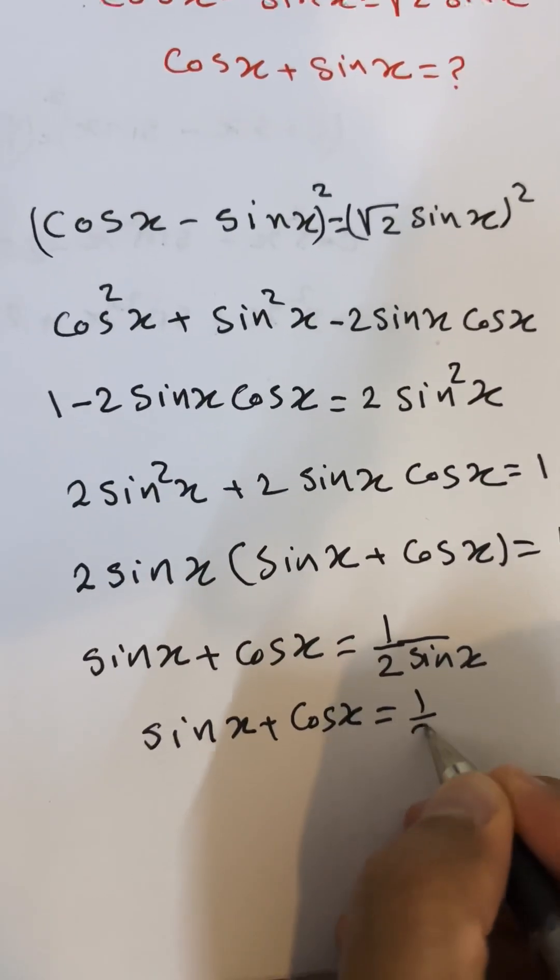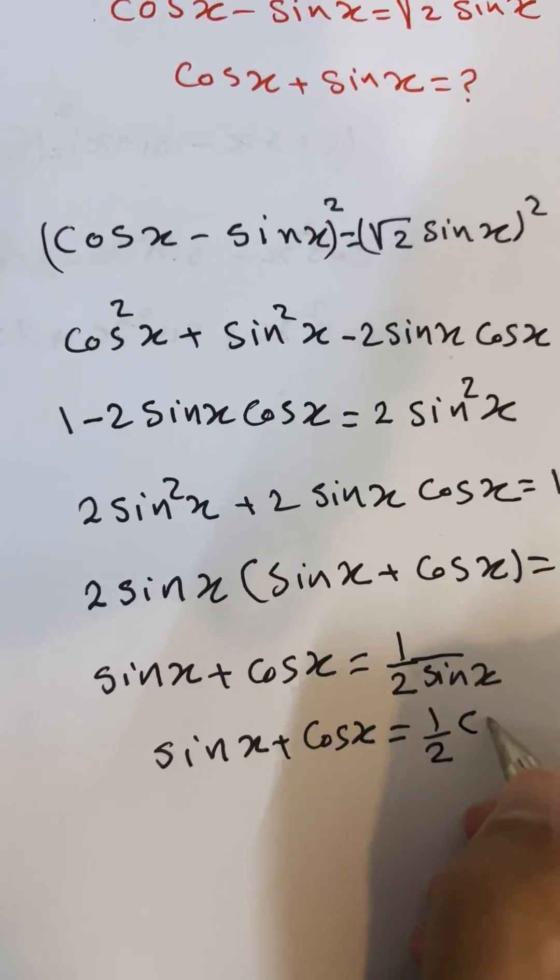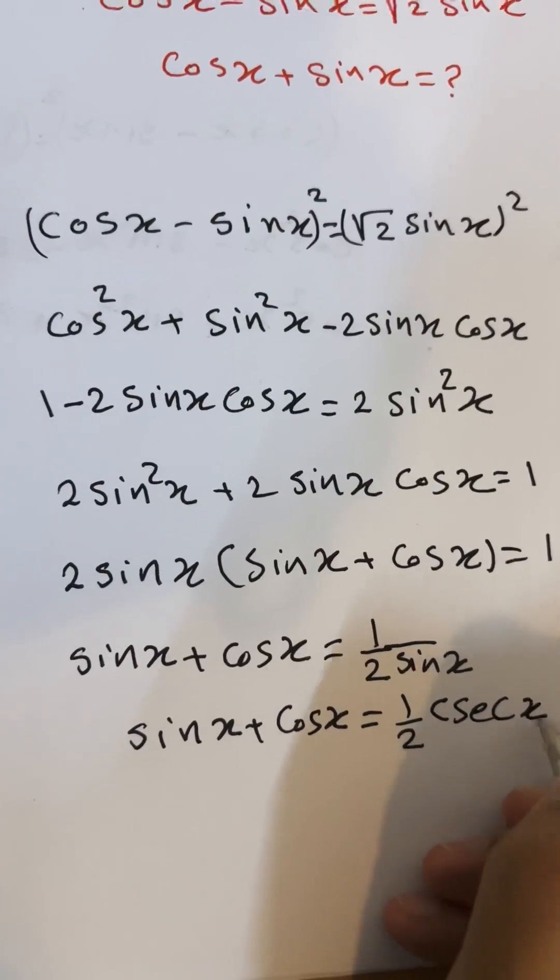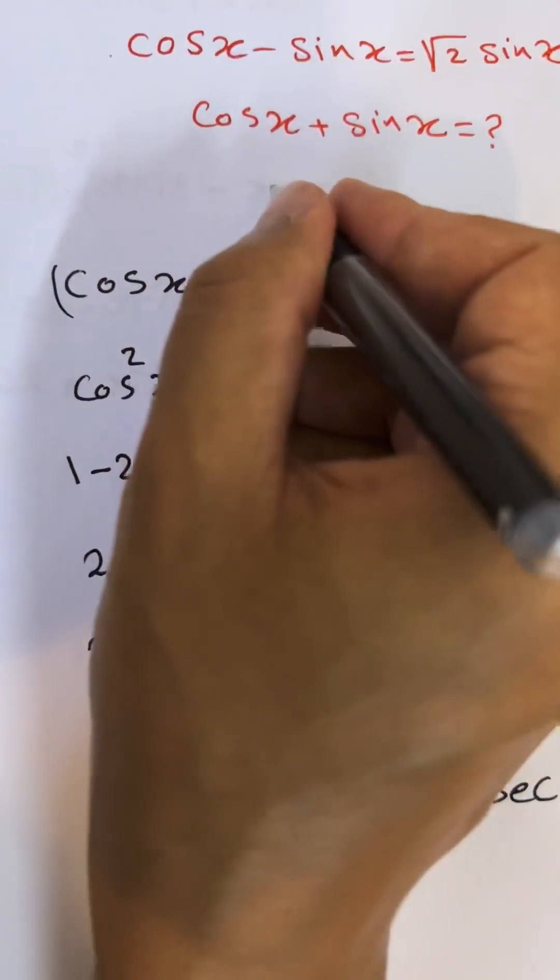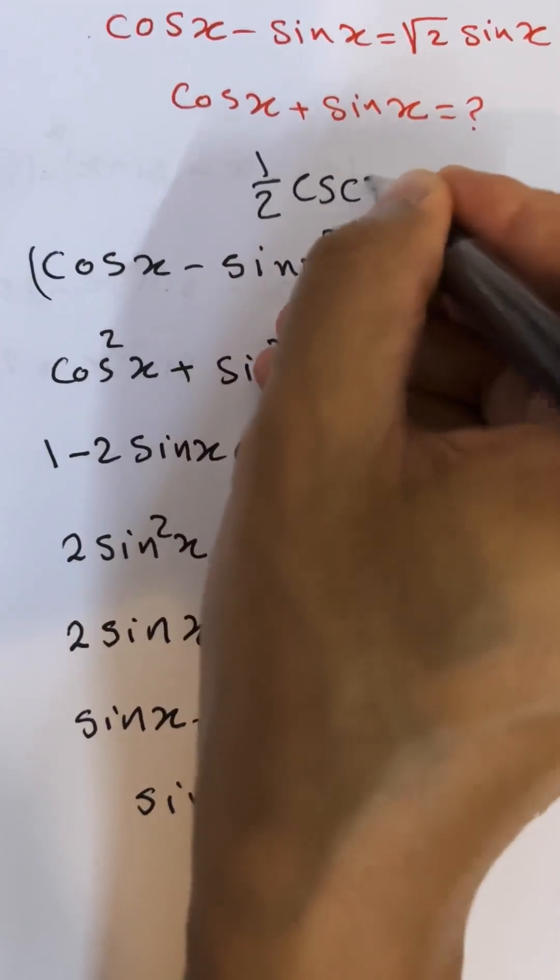...equals 1 over 2 cosecant x. And this is the solution. So here, 1 over 2 cosecant x. This is the answer for this question.